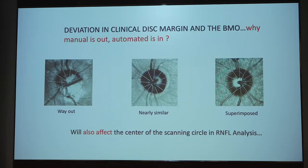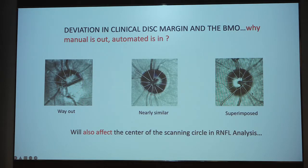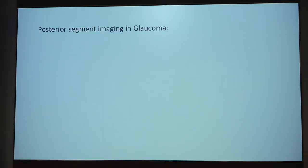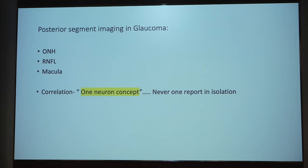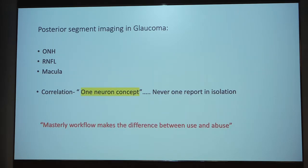The deviation between the clinical disk margin and the BMO is very well known. Manual marking is out and automated is in because you cannot see the Bruch's membrane opening manually and therefore cannot mark the clinical disk margin accurately — the BMO may be way out of the clinical margin, nearly similar, or superimposed. This is impossible to detect by the human eye, and it will also affect the scanning circle in the RNFL analysis. Posterior segment imaging in glaucoma consists of the ONH, the RNFL, and the macula. The correlation of these three using the one-neuron concept is very important — we should never report each structure in isolation.